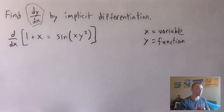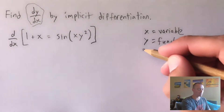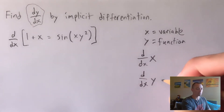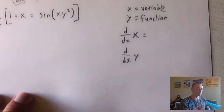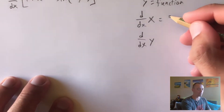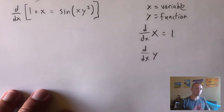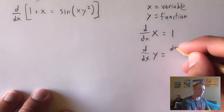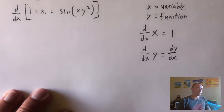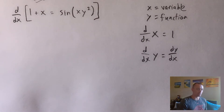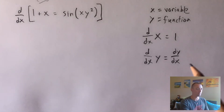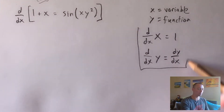Whatever you do to one side you have to do to the other side. Finding d/dx of x is going to be very different from finding d/dx of y, because x is a variable and y is a function. The derivative of x with respect to x is just one. But the derivative of y with respect to x is not just one — it's actually going to be dy/dx, because dy/dx literally means the derivative of y with respect to x.